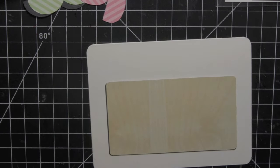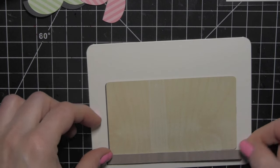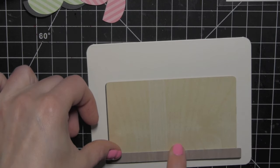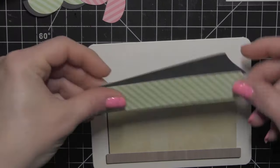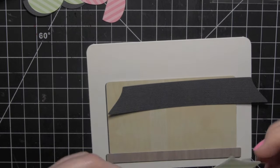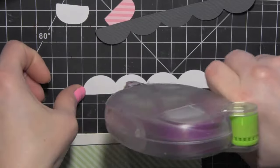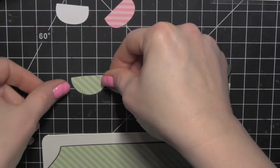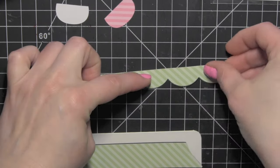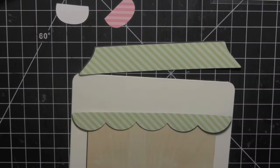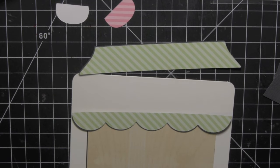And I die cut the elements from some My Mind's Eye Necessities 6x6 wood grain paper for the background of the window and the window ledge. And then for the little overhang there in the stripe I'm using the Lawn Fawn Monami Petite 6x6 paper pad that I've die cut from the stripe paper to create that fun little window awning.